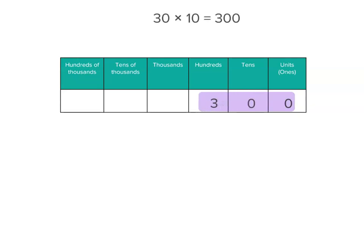30 times 10 equals 300. 300 times 10 equals 3,000. So when you multiply by 10, your digit moves to the left one place.